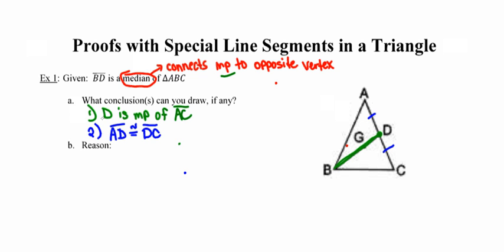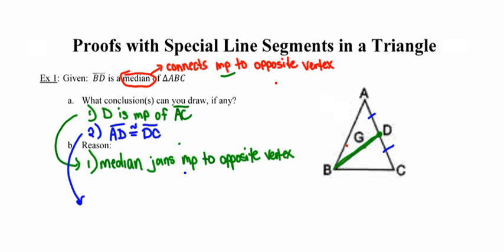As far as my reasoning is concerned, I know that D is the midpoint of AC because a median connects or joins the midpoint to the opposite vertex. I'm able to draw that conclusion about the segments being congruent because I know that a midpoint forms, creates, two congruent segments.